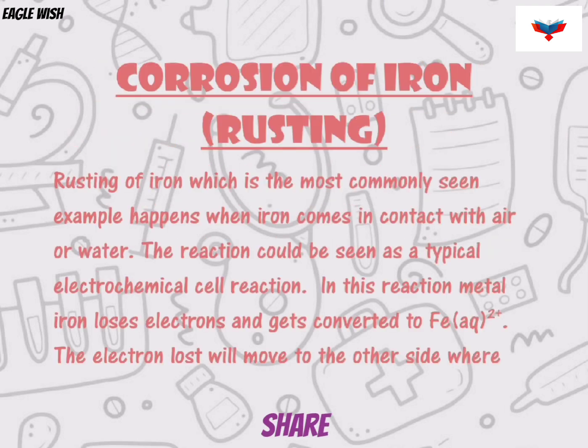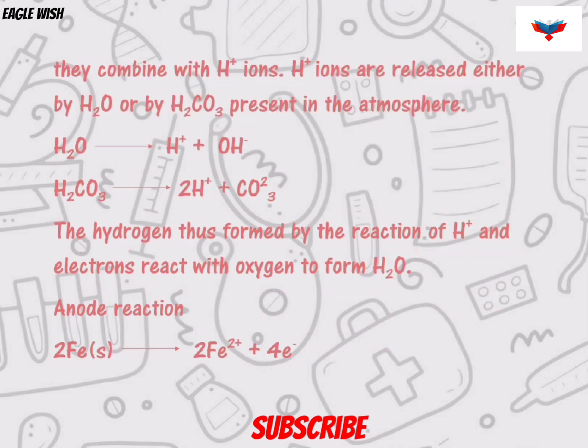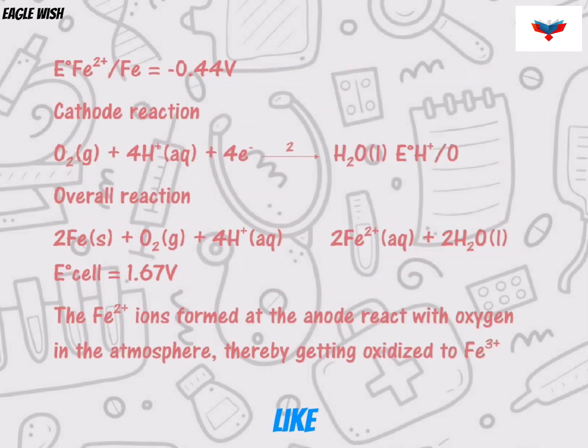Rusting of iron refers to the formation of rust — a mixture of iron oxides — on the surface of iron objects or structures.